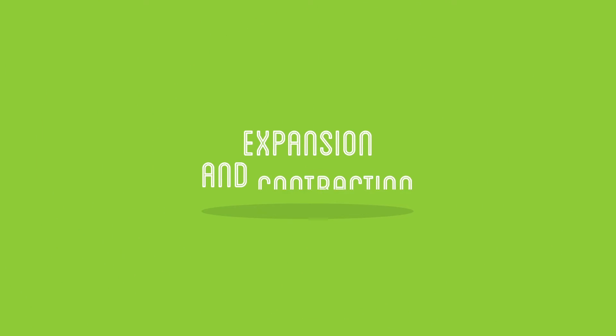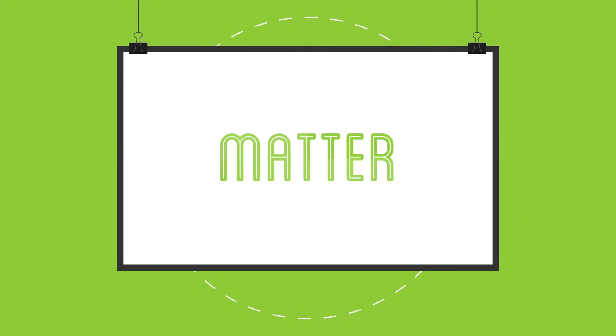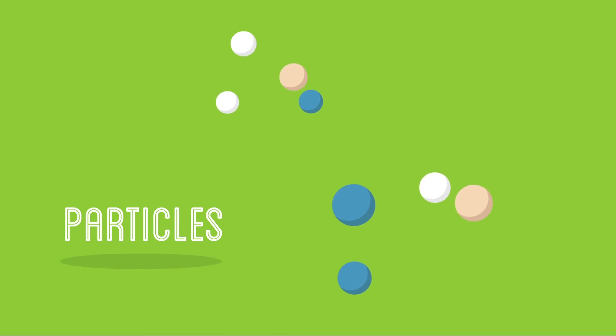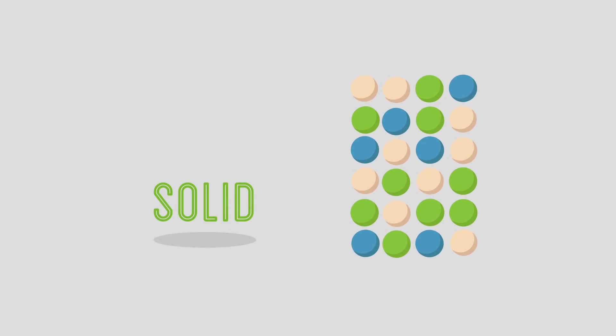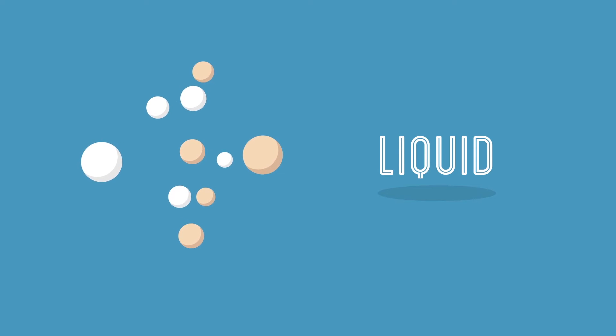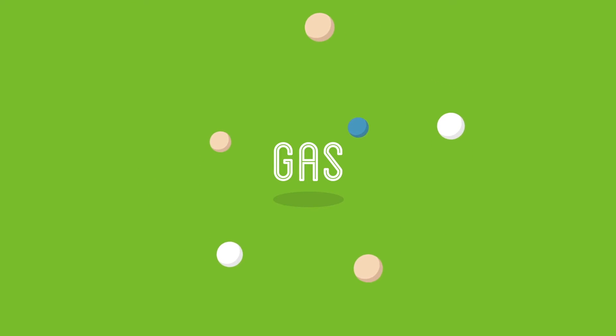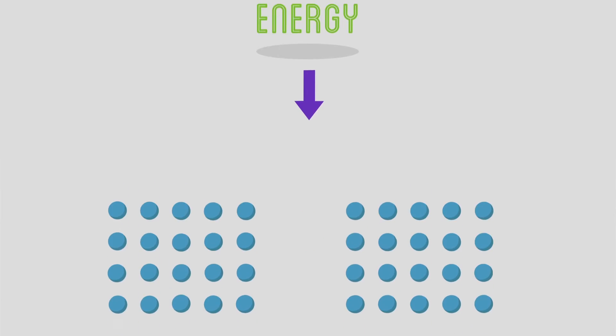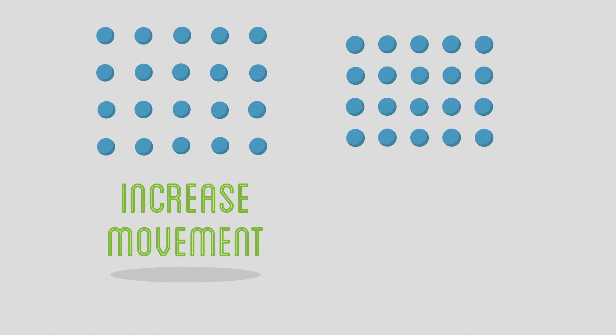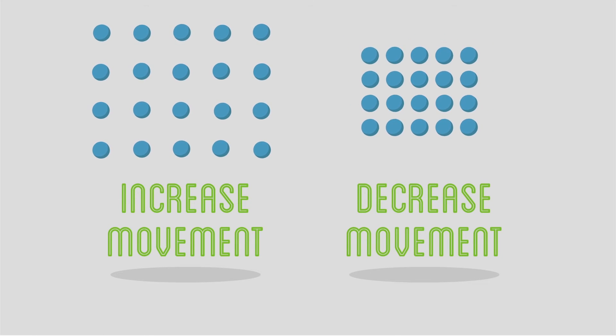The final topic area that we will cover is expansion and contraction, and we will do this by looking at matter. All matter is made of particles. The arrangement of these particles is determined by the amount of energy that they have. In a solid, the particles have little energy and merely vibrate without moving past each other. In a liquid, the particles have more energy than in a solid and are able to move past one another. In a gas, the particles have more energy still and are free to move about in all directions. We can get a material to change state by increasing or decreasing the amount of energy that they have. This increase or decrease in energy can be achieved by changing the temperature. As particles increase their movement, the object will expand, and as particles decrease their movement, the object will contract.